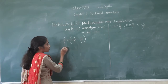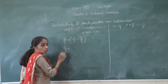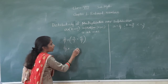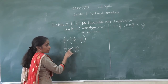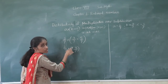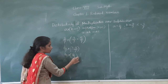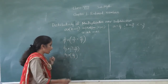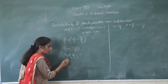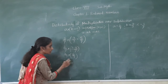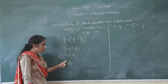First we will solve the bracket. 2 upon 7 as it is, multiplied. Now here the denominators are same, so subtract the numerators: 3 minus 5. 2 upon 7 multiplied by minus 2 upon 7. Now 1 number is positive and another number is negative, so the product will be negative. 2 twos are 4, 7 sevens are 49. So A into bracket B minus C gives us the answer: minus 4 upon 49.